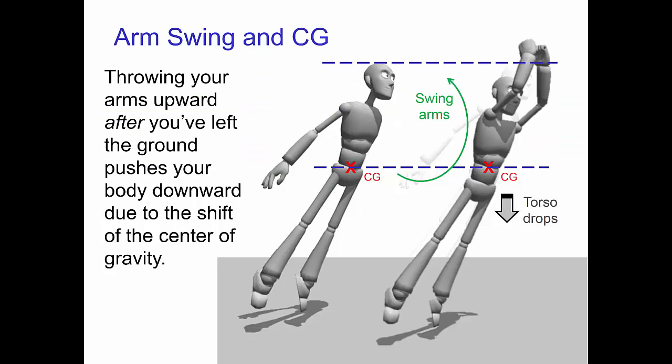If you throw your arms upward after you've left the ground, then you shift your center of gravity to a higher position in your torso. However, the center of gravity is the same distance from the ground. So basically that means that you throw your body downward.